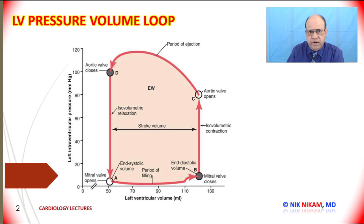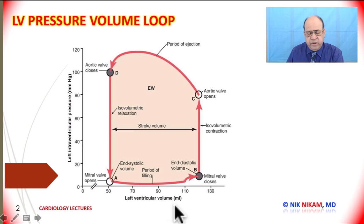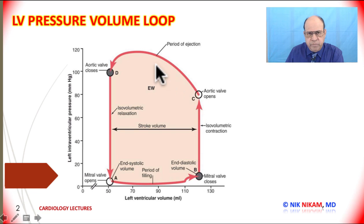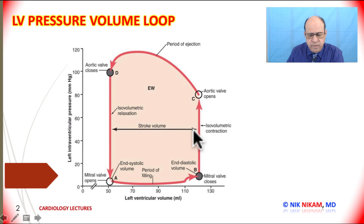Let us look at some of the other parameters we can observe in this pressure volume loop. This is our end systolic volume and this is our end diastolic volume — that is, before the ventricle begins to eject blood into the aorta. Between the end diastolic volume and the end systolic volume we have the stroke volume.